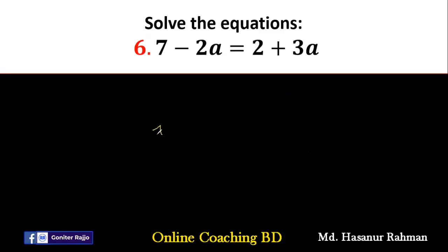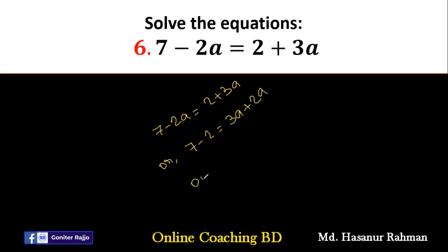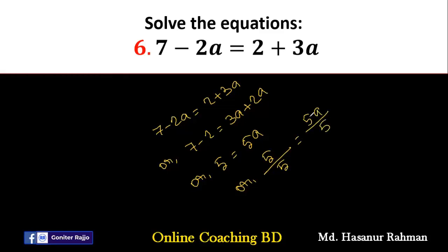Number 6 is 7 minus 2a equal to 2 plus 3a. We have to move minus 2a to the other side, giving plus 2a. So 7 minus 2 is 5, and 3a plus 2a is 5a. Now we divide both parts by 5: 5 divided by 5 is 1, so a equal to 1 is our final answer.